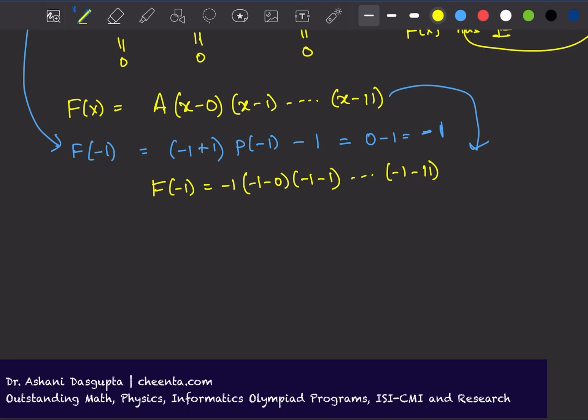There is a capital A in front of it: capital A times (-1)(-1)(-1) and so on. I'm just replacing x by -1 in this expression. There are 12 terms here, all of them are negative.